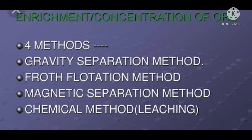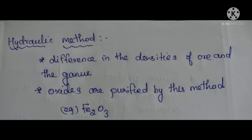Now we can see the first method — hydraulic washing, also called gravity separation. The main principle behind this method is the difference in the density of the ore and the gangue. Based on that, we separate the ore and gangue.